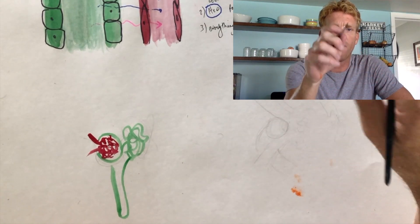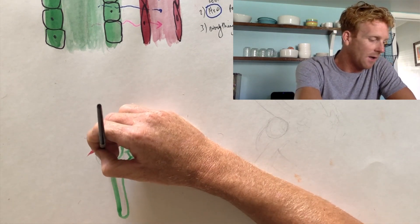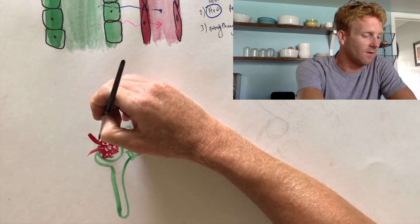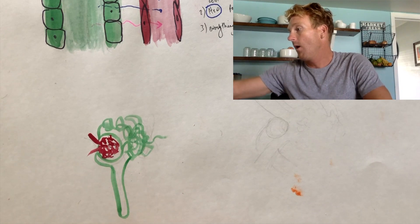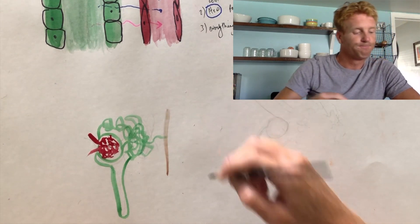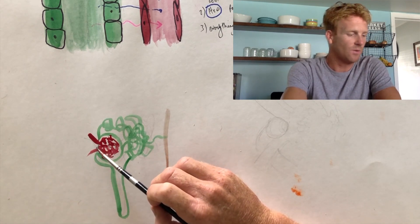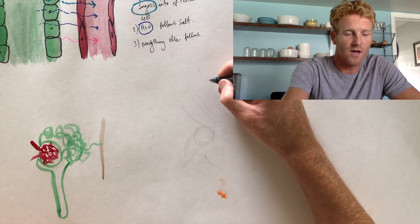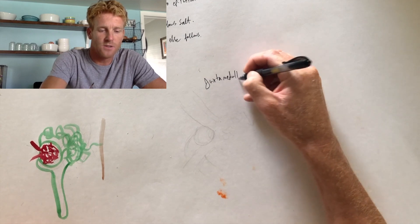Here's something not mentioned before: when the nephron loop comes back up — the ascending limb — it goes right beside the glomerulus, right between the afferent and efferent arterioles. Then it squiggles around and eventually meets up with the collecting duct. Something really important happens when the nephron loop comes back up to the glomerulus in this area, called the juxtaglomerular complex.